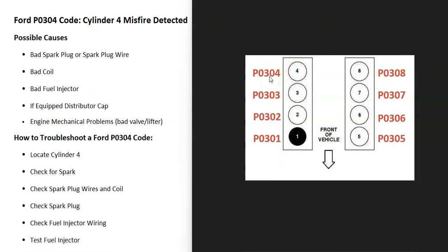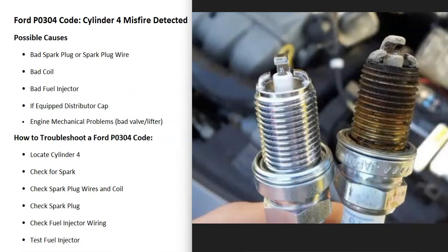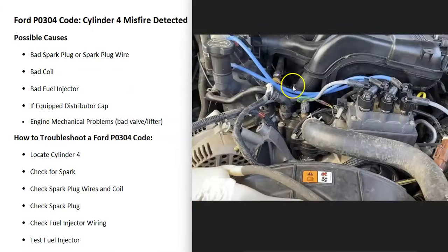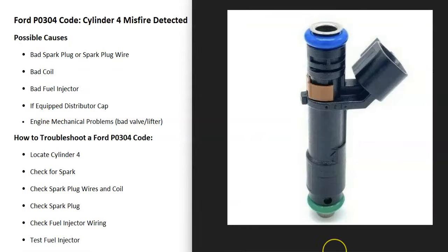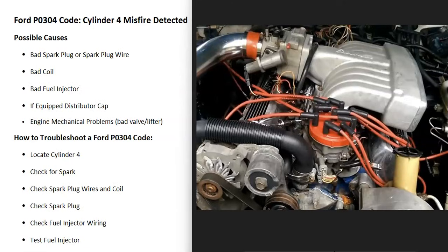What would be some possible causes? It could be a bad spark plug that has just failed and needs to be replaced. It could be the spark plug wire going to the spark plug, or it can also be a bad coil — including coil packs and ignition coils that slide in and out at each cylinder. It could also be a bad fuel injector at cylinder number four that has failed or is clogged. If you have an older Ford with a distributor cap, it could be a bad distributor cap. It's also possible there's a mechanical problem like a bad valve or a bad lifter, but usually it's going to be either something with the fuel delivery or with the spark.